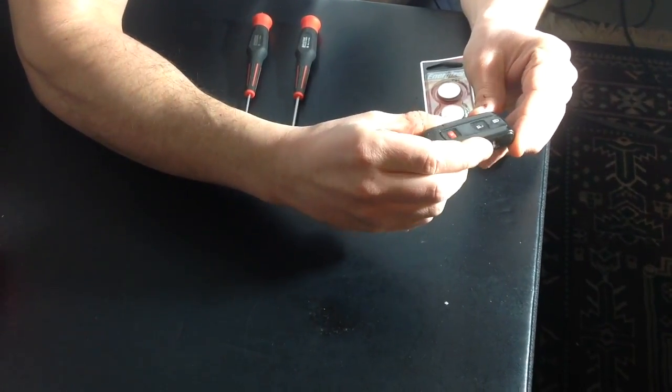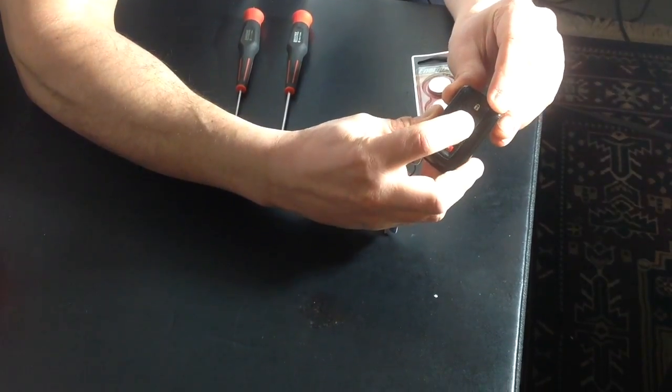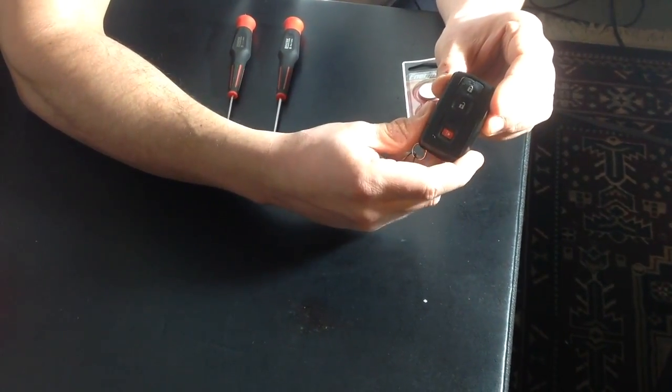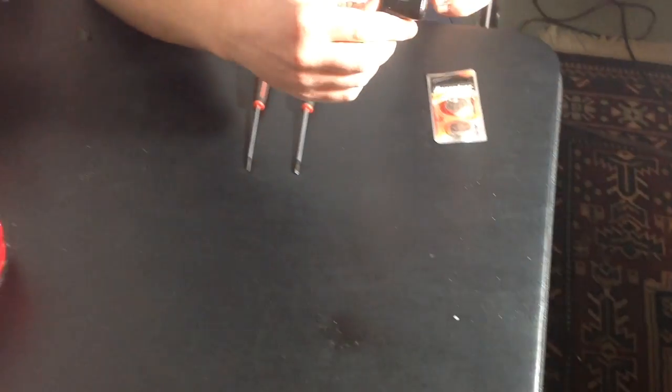So you know that either the key fob is dead or the battery is dead. More or less, the battery will always be low. The first thing to do when you've got your key fob is you want to take out the actual key.